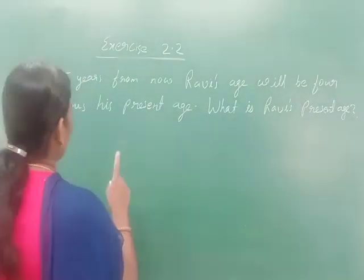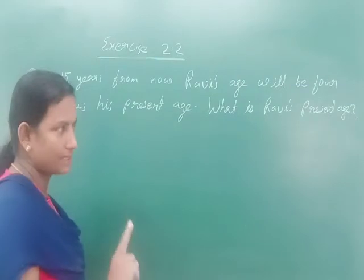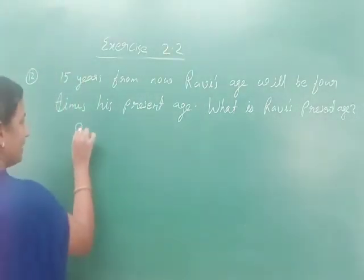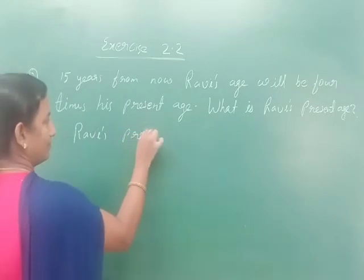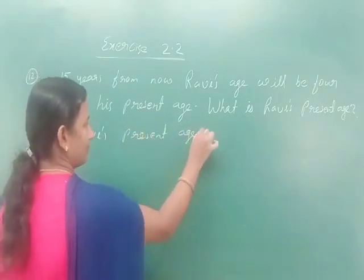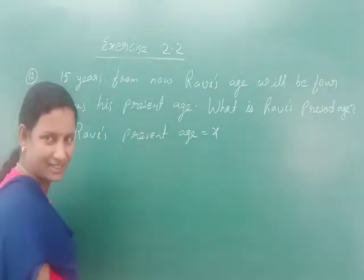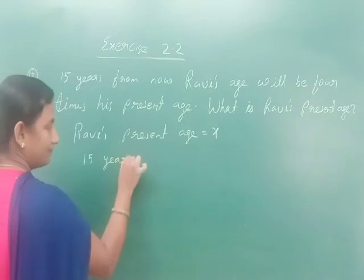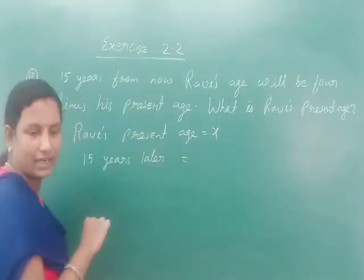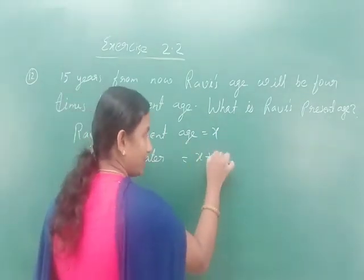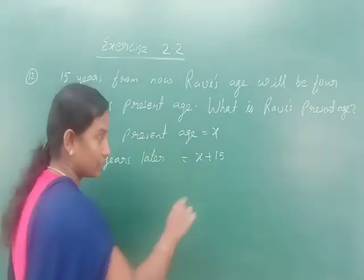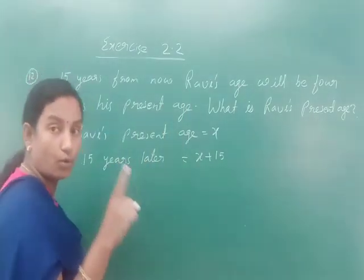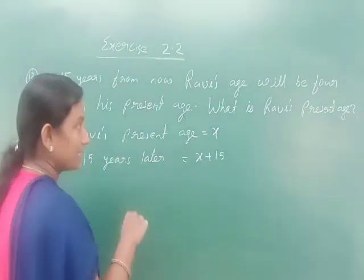Next, question number 12. 15 years from now, Ravi's age will be 4 times his present age. What is Ravi's present age? Let Ravi's present age be x. Then 15 years later, his age will be x + 15.